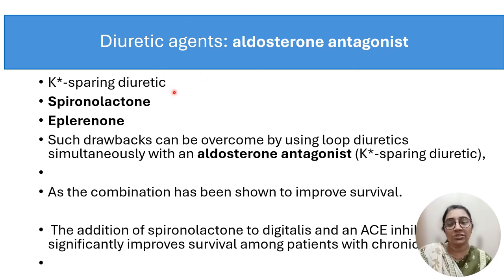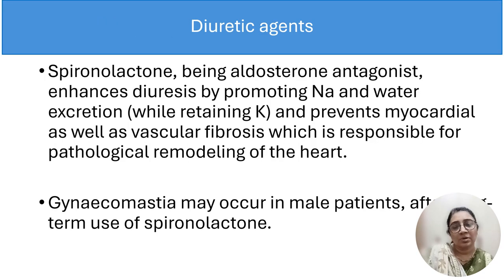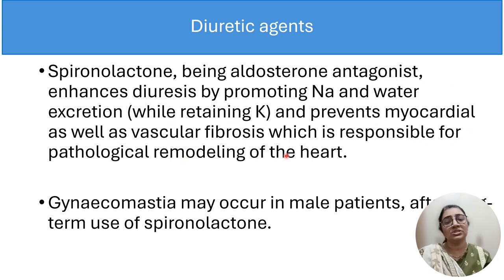Aldosterone antagonists — spironolactone and eplerenone — are potassium-sparing diuretics. The electrolyte imbalance drawbacks of loop diuretics can be overcome by adding an aldosterone antagonist. Combining loop diuretics with potassium-sparing diuretics can improve patient survival. In addition, spironolactone with digitalis and ACE inhibitors significantly improves survival in chronic heart failure. Spironolactone enhances excretion of sodium and water while retaining potassium, and prevents myocardial and vascular fibrosis responsible for pathological remodeling of the heart. Gynecomastia is an adverse effect of spironolactone in male patients.